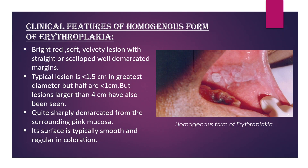Clinical features of the homogeneous form of erythroplakia: it appears as a bright red, soft, velvety lesion with straight or scalloped, well-demarcated margins. The typical lesion is less than 1.5 cm in greatest diameter, and half are less than 1 cm, but lesions larger than 4 cm have also been seen. It is usually quite sharply demarcated from the surrounding pink mucosa, and its surface is typically smooth and regular in coloration.